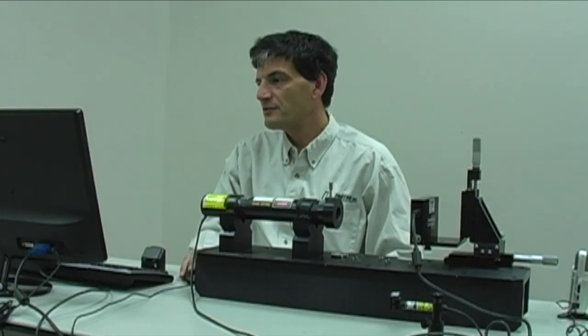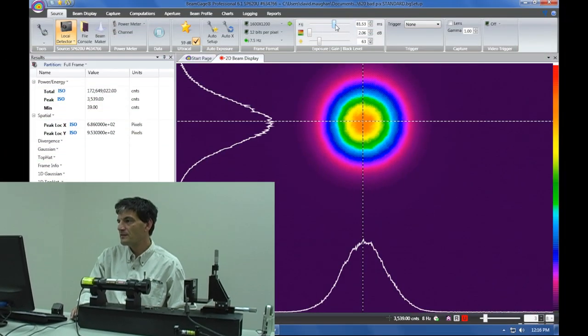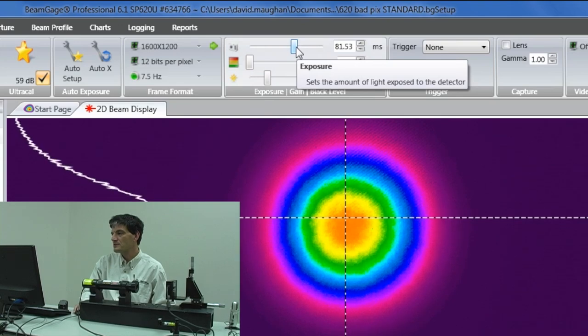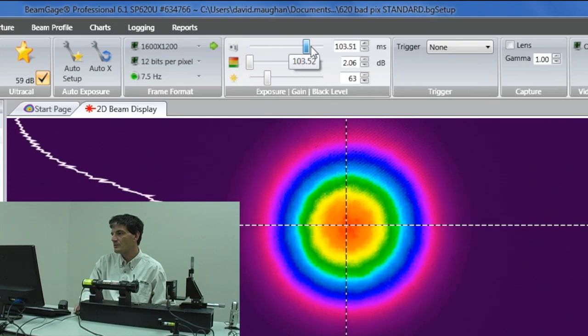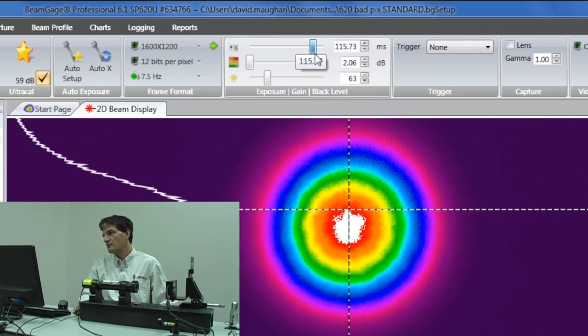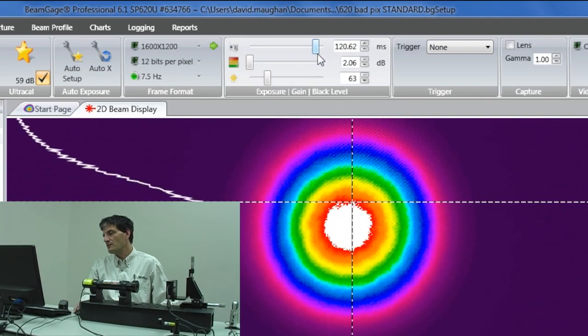A final way to adjust the beam attenuation, or at least the sensitivity of the camera, we do allow you to control the integration time of the camera. You can see as I move it back and forth, what happens is you can see sort of a white area as I increase exposure time.